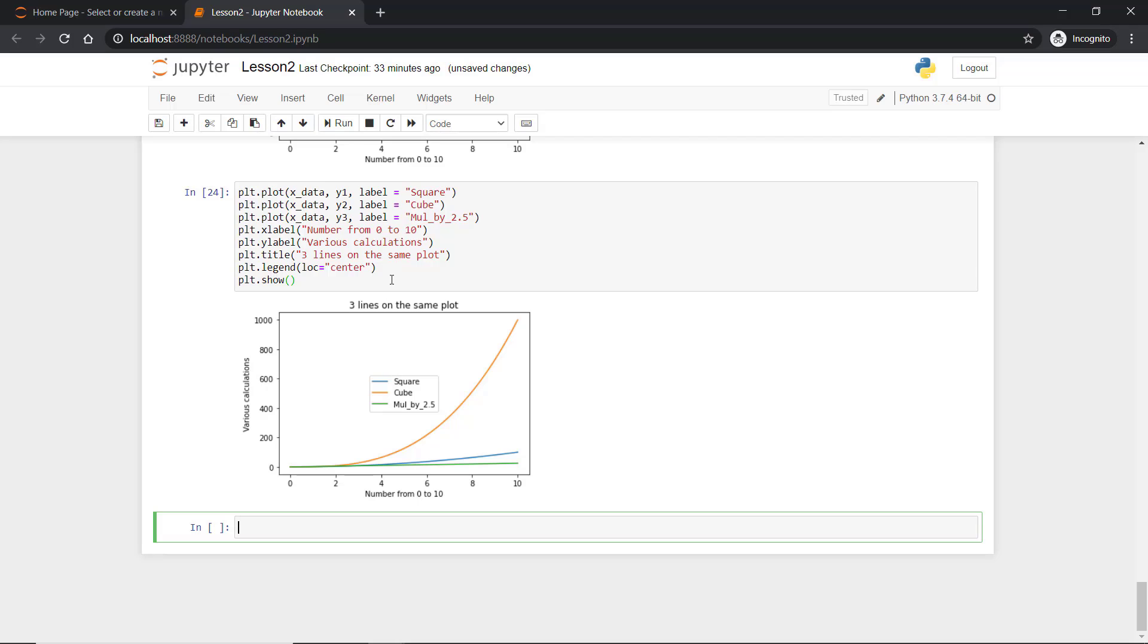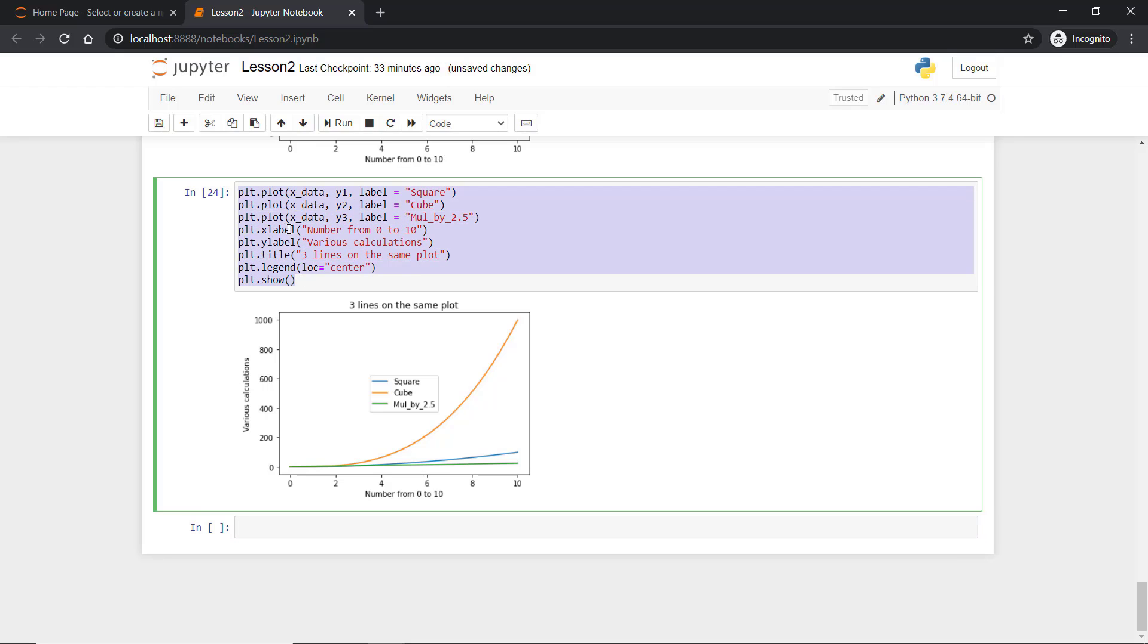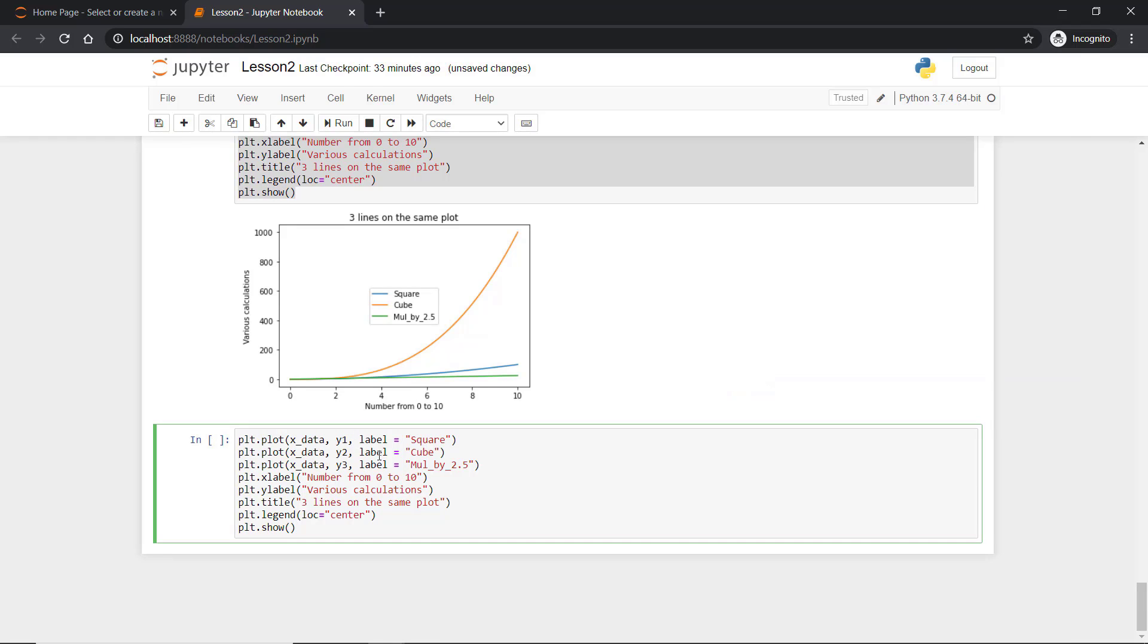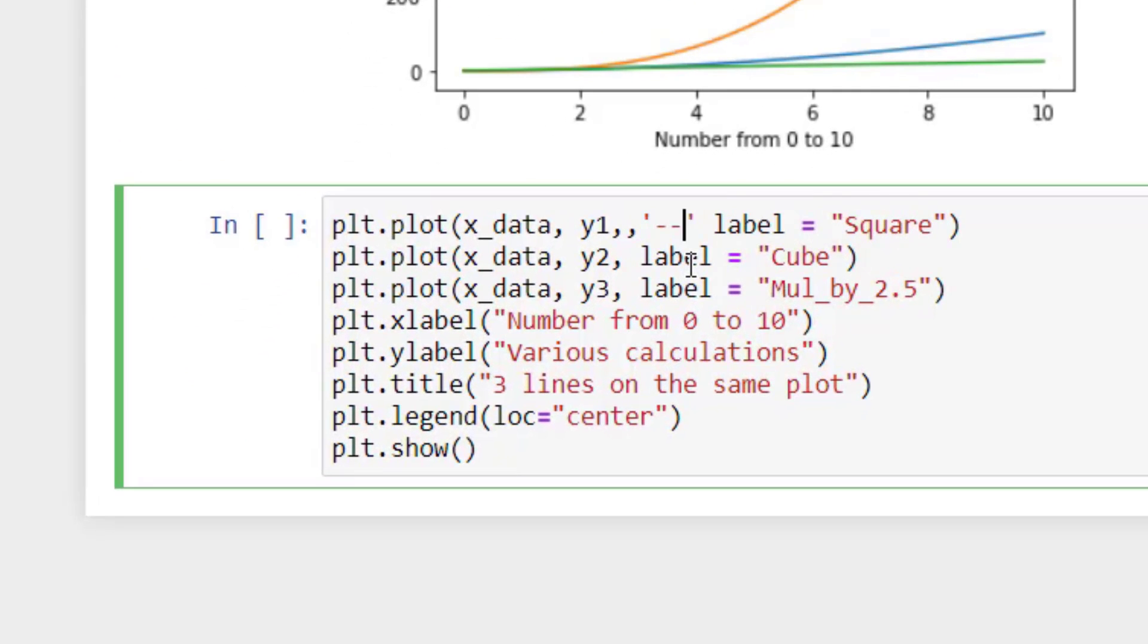After creating the legends you can also play with the formatting as usual. Like for example, I will just copy this code, place it here and I want you to play with the line formatting. So let's say I will format this line by saying minus r. So dashed line with red color, I am sorry.